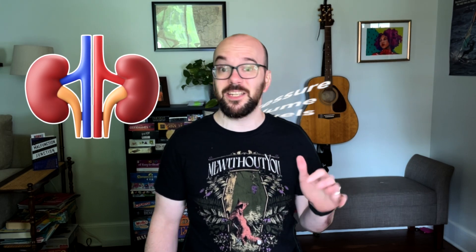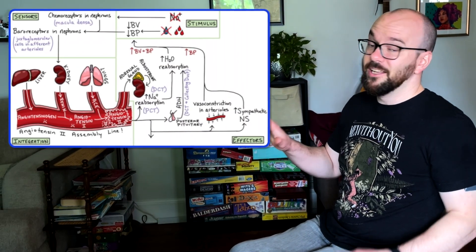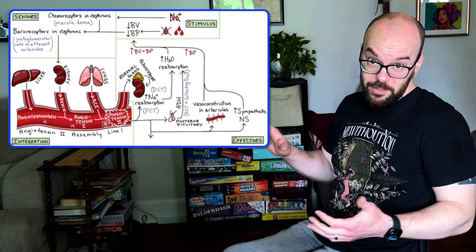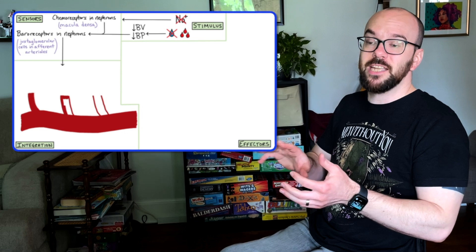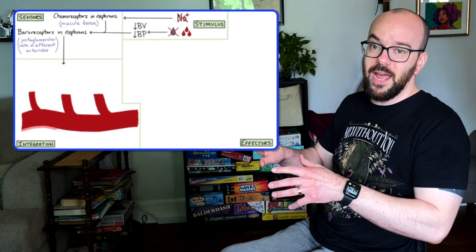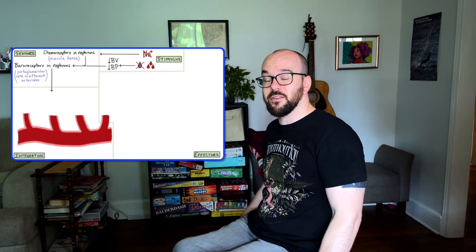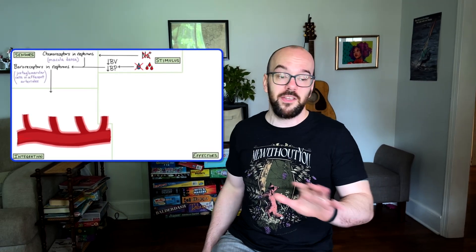It's going to involve the kidneys and a bunch of other organs, a lot of hormones, and a few enzymes. When you look up a diagram of it, it looks a bit overwhelming at first, but in this video we're going to take it step by step and build this out. At the end, you'll have a chance to practice, so by the end of this video you're going to know the RAA system like the back of your hand.